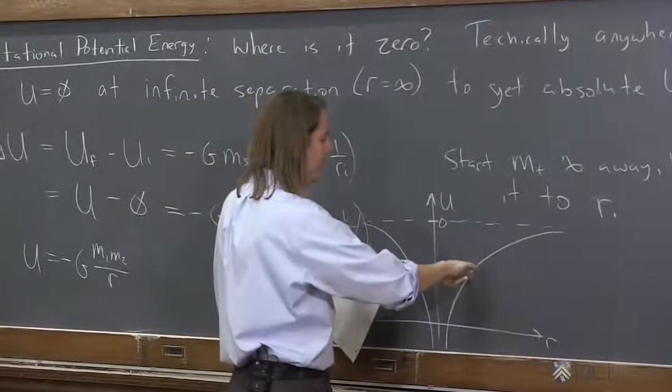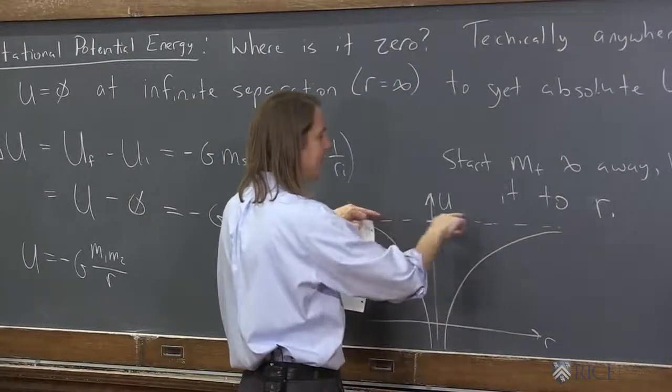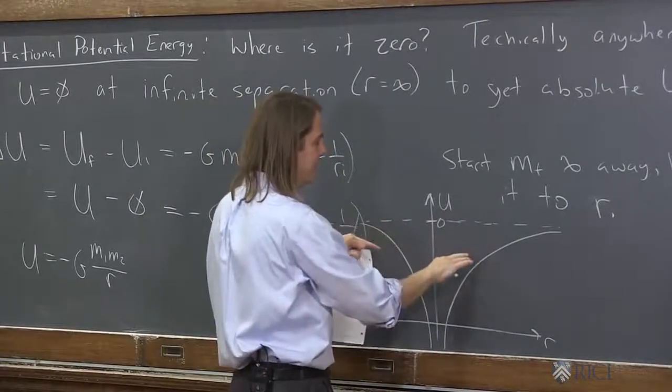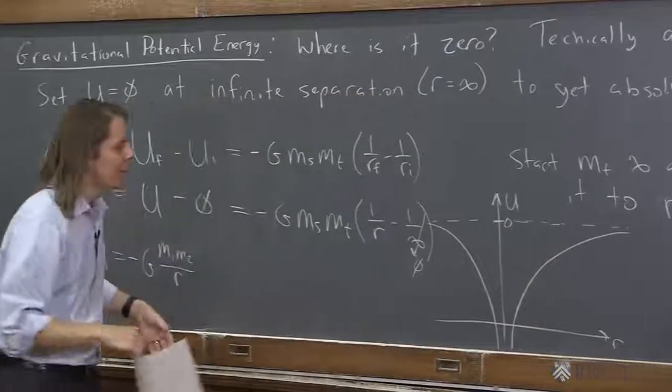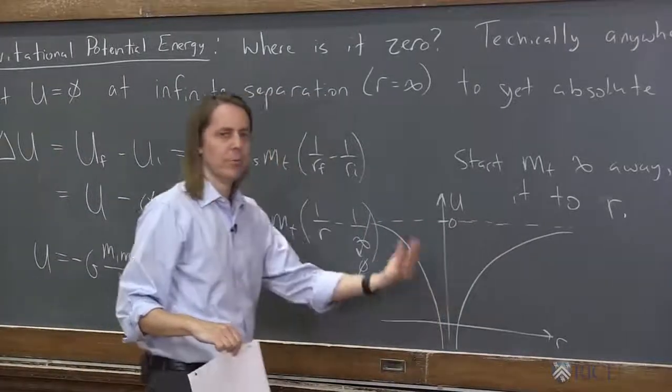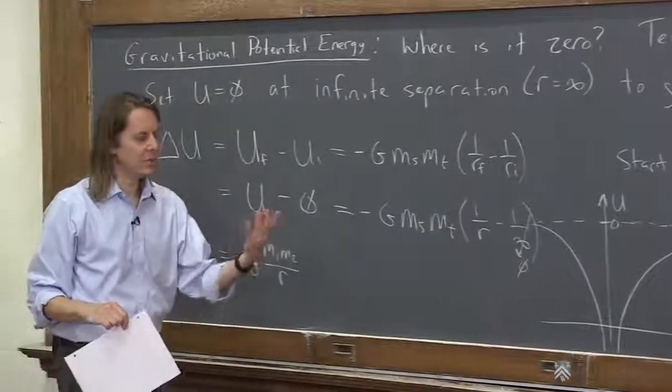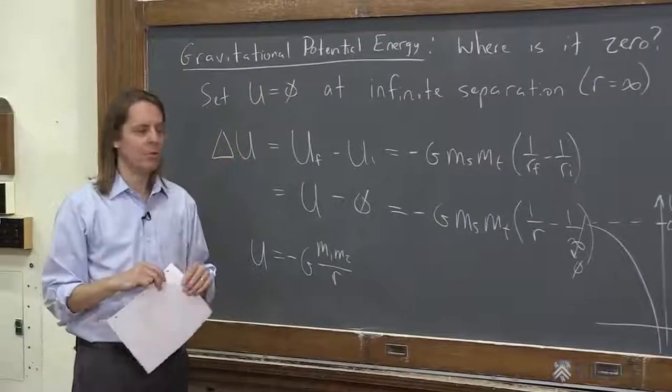But if we go towards it, it always goes down. And we define this level as zero when we wrote it this way. So that's why this is a negative 1 over r. This is why we call things a gravitational well. As you get close to them, you're always losing potential energy, and you can fall into a gravitational well.